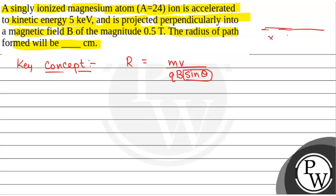So suppose this is the area of magnetic field, this is the region of magnetic field. And we have been given that the charged particle is projected perpendicularly to the magnetic field.